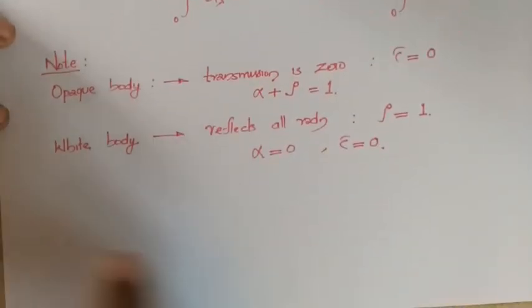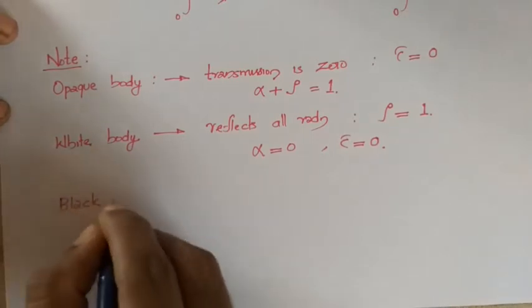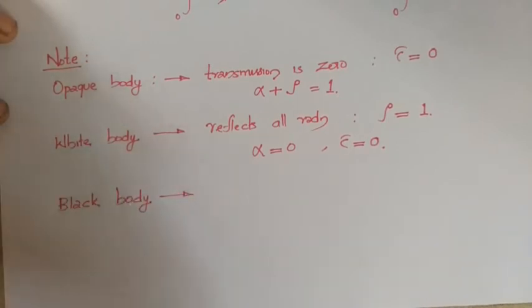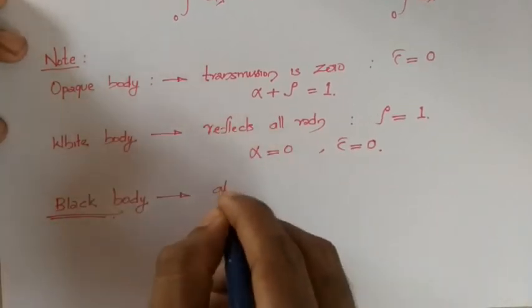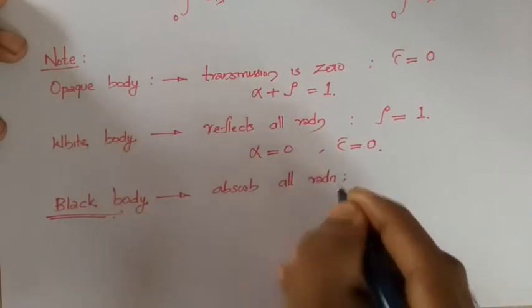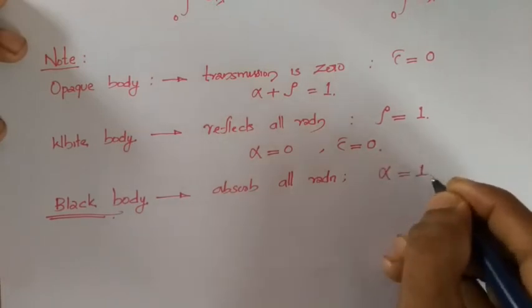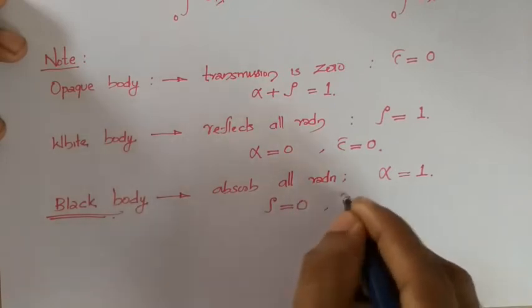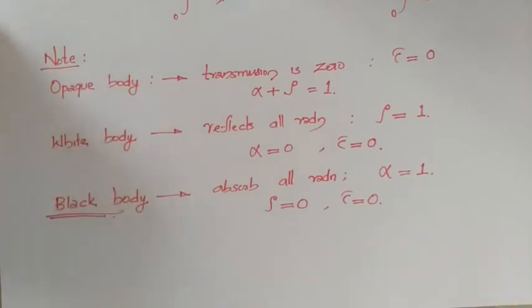A black body is a body which absorbs all radiation incident on it. Its absorptivity alpha equals 1, and therefore reflectivity is 0 and transmittivity is also 0. The black body is considered a reference body in radiation study, and its details will be discussed in coming videos.